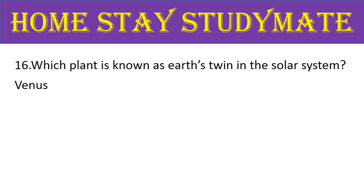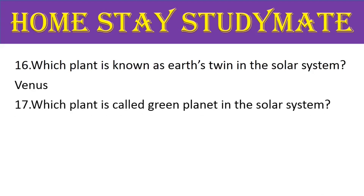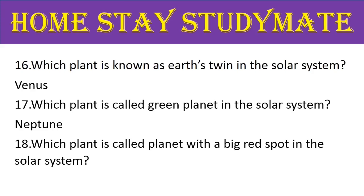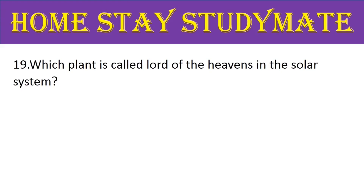Question number 17: which planet is called the green planet in the solar system? The right answer is Neptune. Next, question number 18: which planet is called the planet with a big red spot in the solar system? The right answer is Jupiter. Next, question number 19: which planet is called the lord of the heavens in the solar system? The right answer is Jupiter.